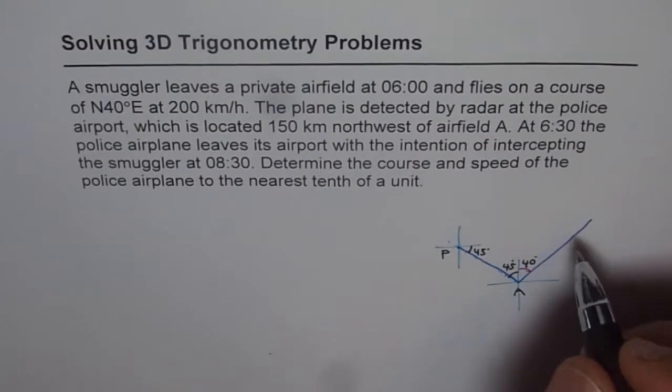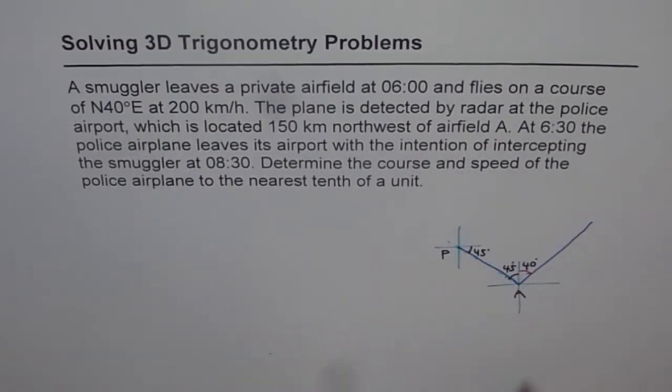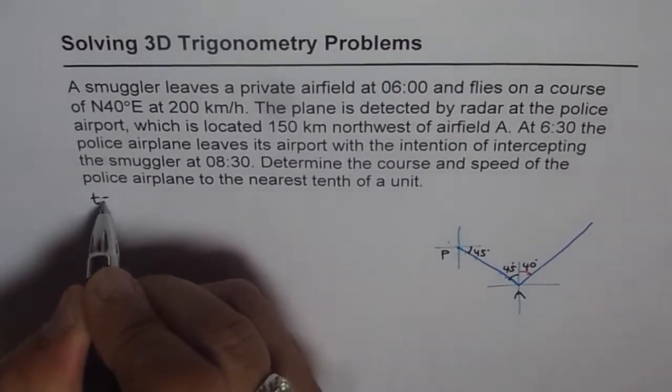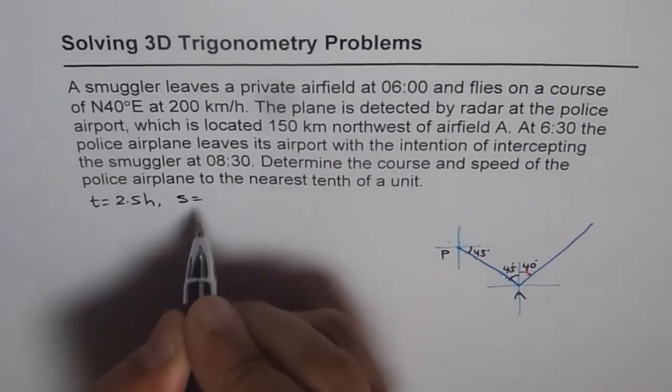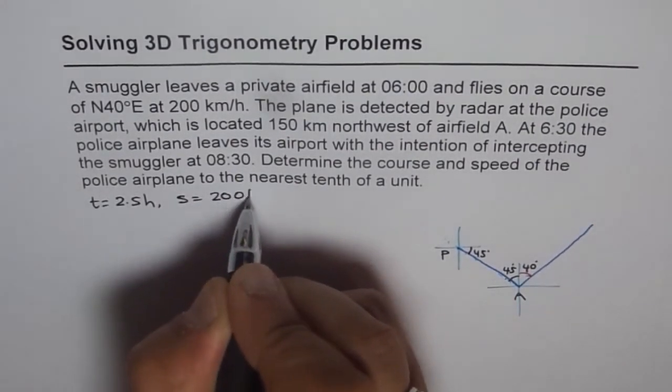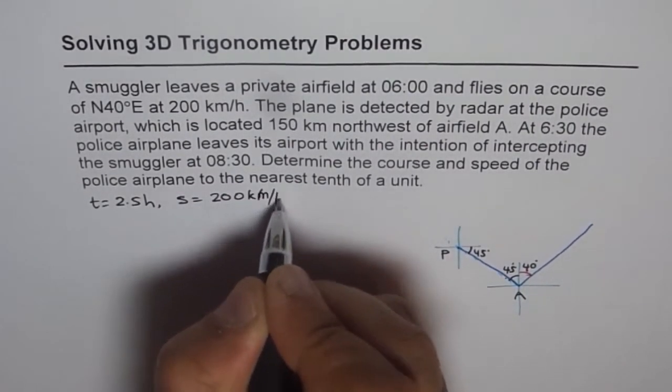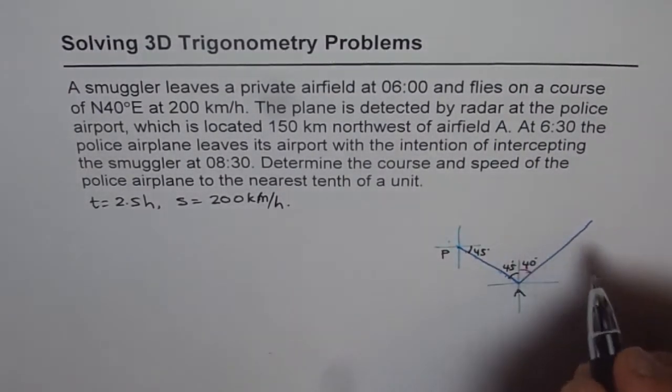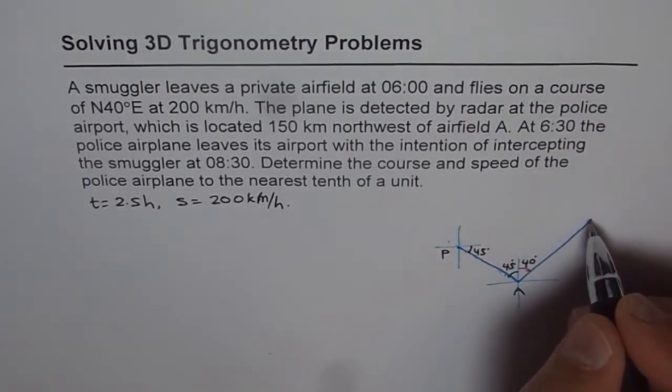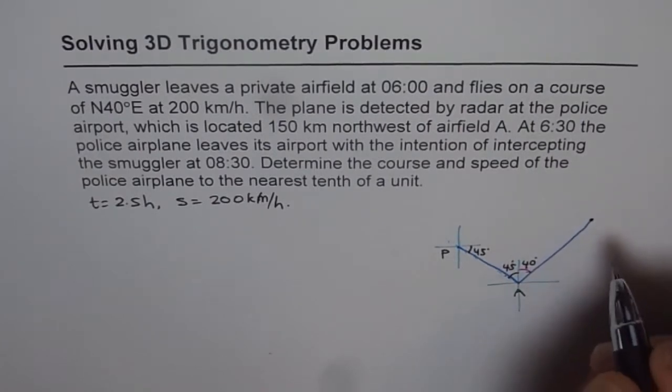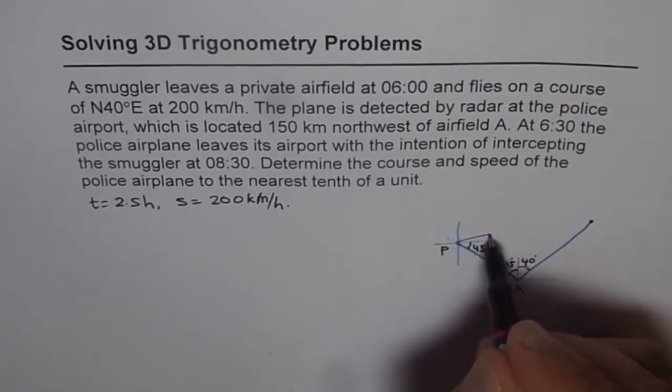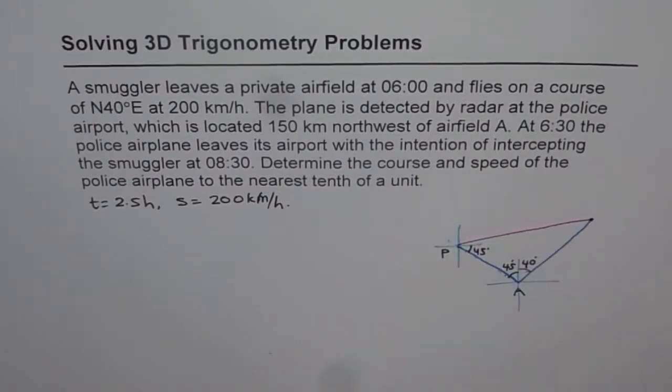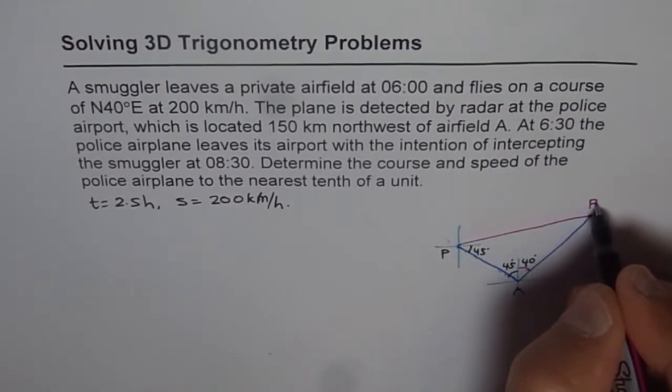And so we will again sketch the XY plane here, so that we can get an idea of angles which we are dealing with. So this angle is 45. This is northwest 45 degrees. Now that means that is also 45 degrees. So let us call this Airport A, and let us call this P as the police airport. And then what happens?